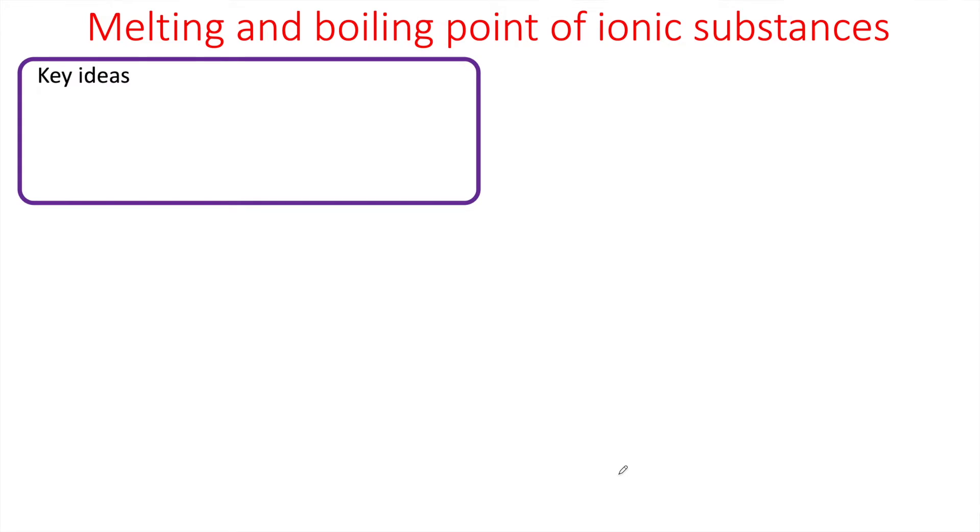In this short video we're going to see how we can decide which ionic substances have a higher melting point than others. We need to remember two key ideas. First of all, it's about the bond between them, so the stronger the ionic bond between the metal and non-metal ion, the higher the melting point. That's because more energy is required to break the bonds, and you need to include both those statements in your answer.